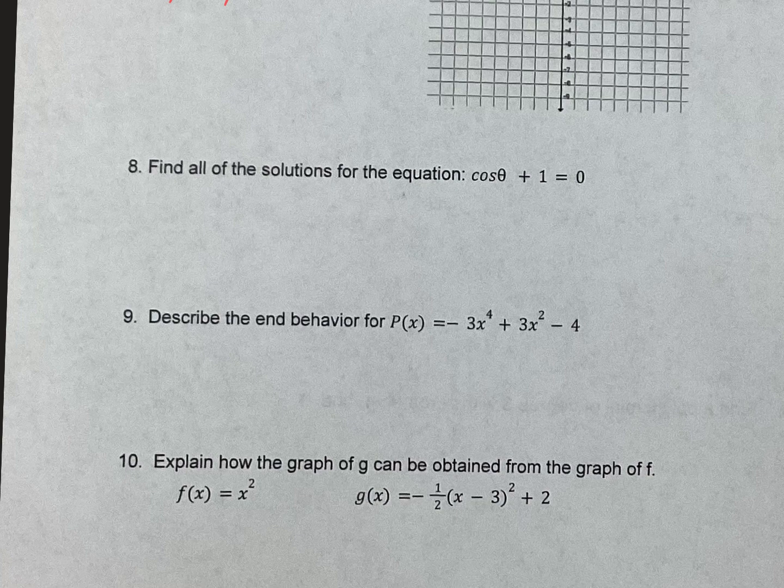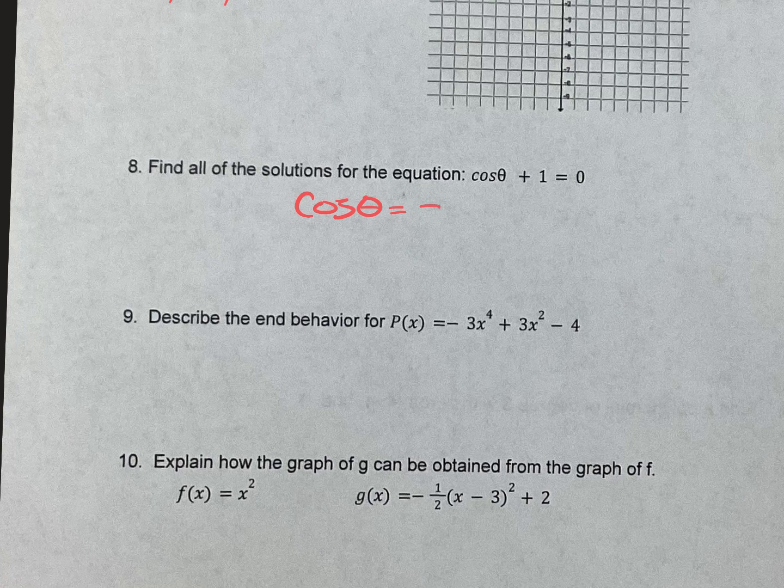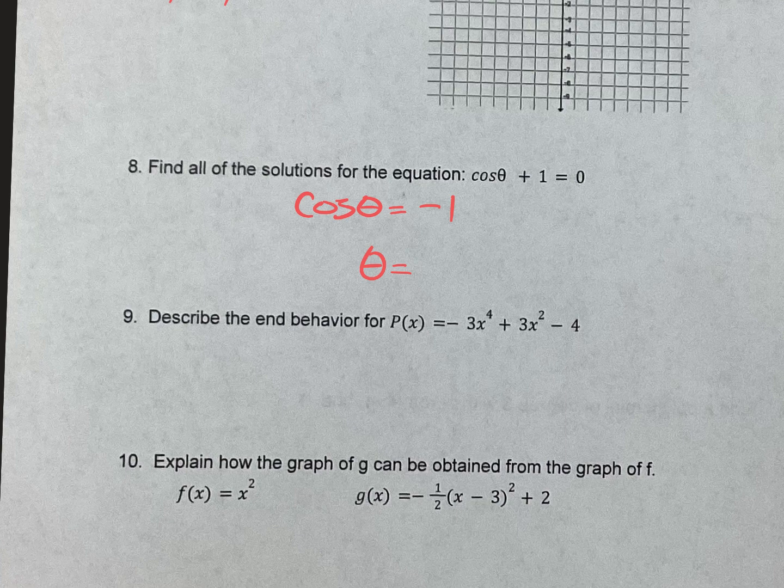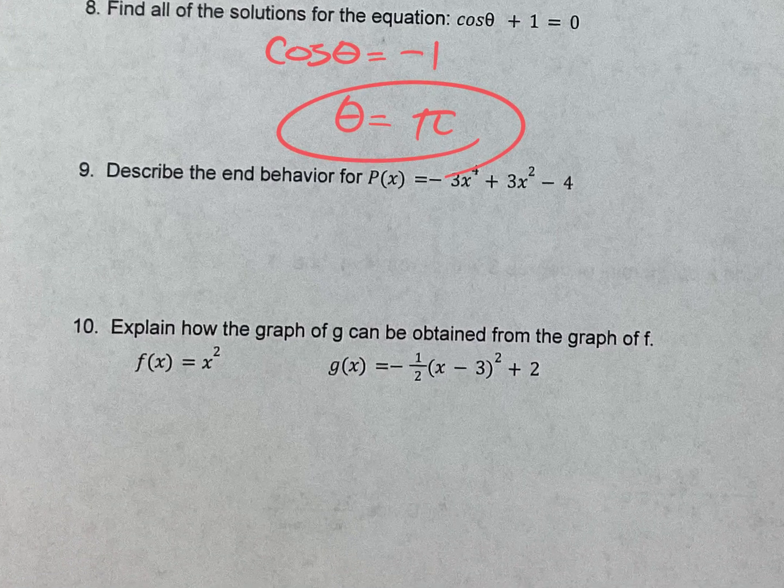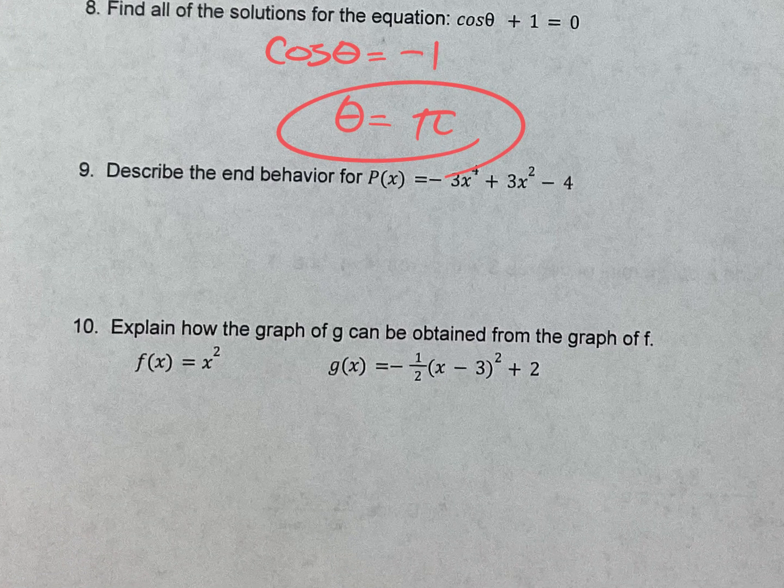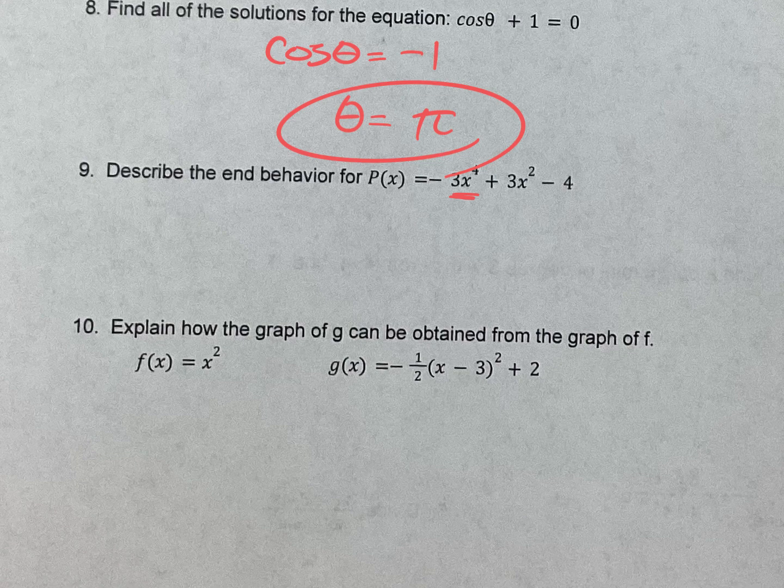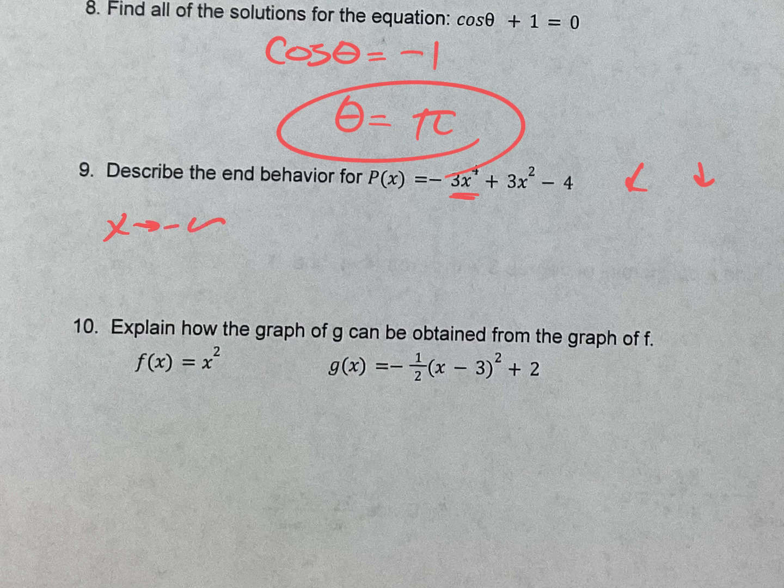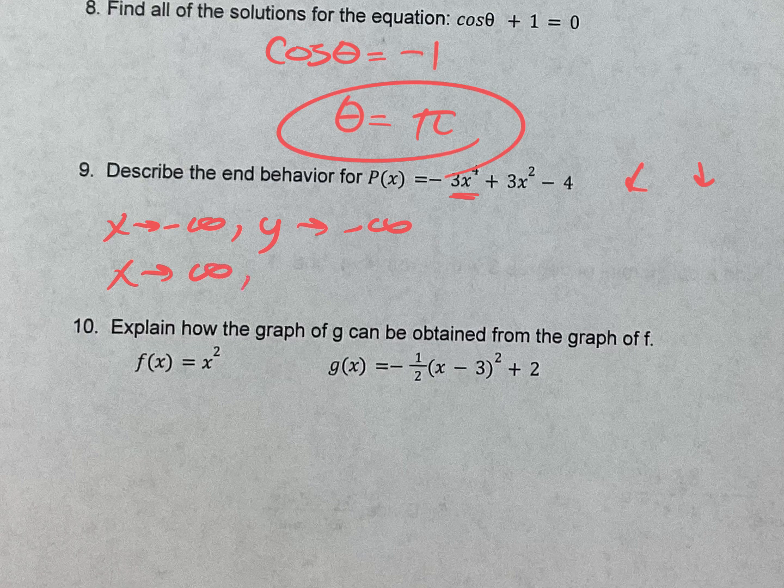Number 8, been a while here. Find all the solutions of cosine theta plus 1. Just move the negative 1 over. So it's asking you, where is cosine negative 1? Remember, cosine is x, sine is y. Where is x negative 1 on the unit circle? At pi. All you got to do. Number 9, describe the end behavior. First thing I notice is it's even and negative, which means it's going down both ways. So I'm going to say, as x goes left, the graph goes down. As x goes right, the graph goes down. And there's that one.